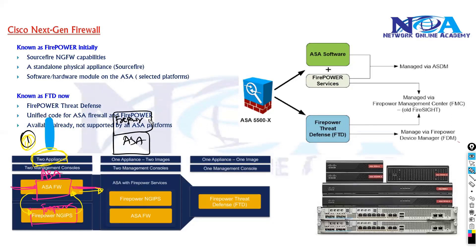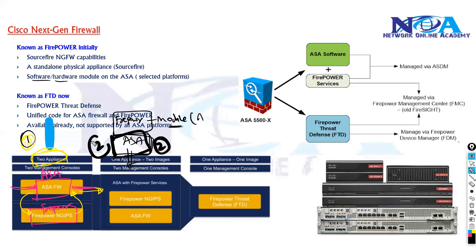Another option is to have just one appliance — an ASA added with a Firepower module. This module is not a dedicated device; it can be in the form of software or hardware, depending on what different platforms support. This gives you the benefits of both in a single physical hardware with Firepower Services added on top. The third option is to use a dedicated FTD device, the Firepower Threat Defense, which is common nowadays when buying a new product, as it has a unified image supporting both ASA features and Firepower Services.